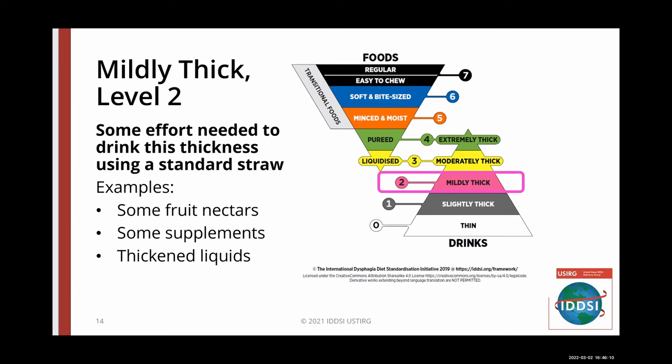Mildly thick, level two drinks can be sipped from a cup or straw. They pour quickly from a spoon but flow more slowly than a thin or slightly thick liquid drink. Whether you are making your own or purchasing pre-thickened liquids, you need to perform the IDDSI flow test to confirm the thickness of the liquid. You can even do the flow test on supplements or liquid medications.